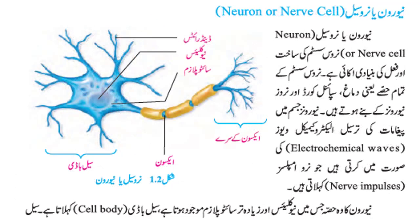Neuron یا nerve cell، nervous system کی ساخت اور فعل کی بنیادی اکائی ہے۔ Nervous system کے تمام حصے یعنی دماغ، spinal cord اور nerves، neurons کے بنے ہوتے ہیں۔ Neurons جسم میں پیغامات کی ترسیل electrochemical waves کی صورت میں کرتی ہیں جو nerve impulses کہلاتی ہیں۔